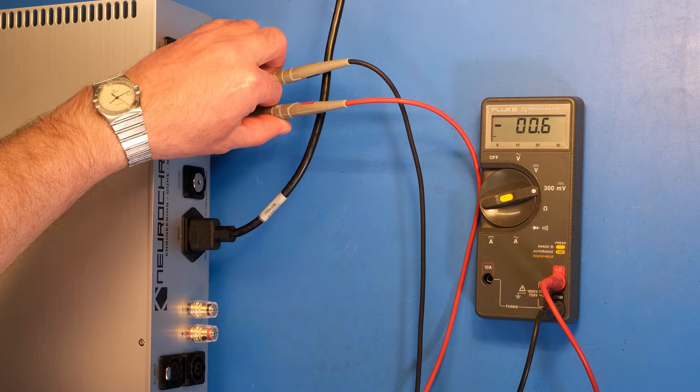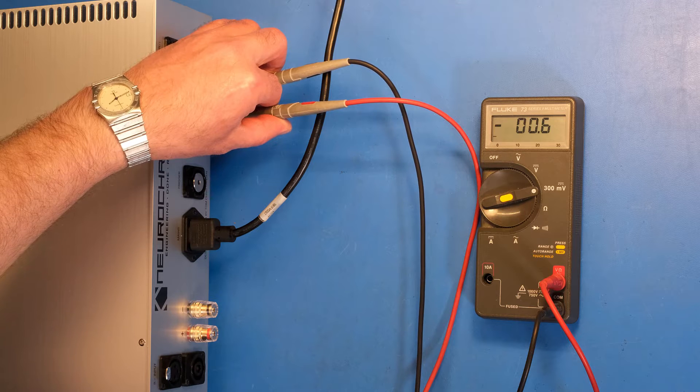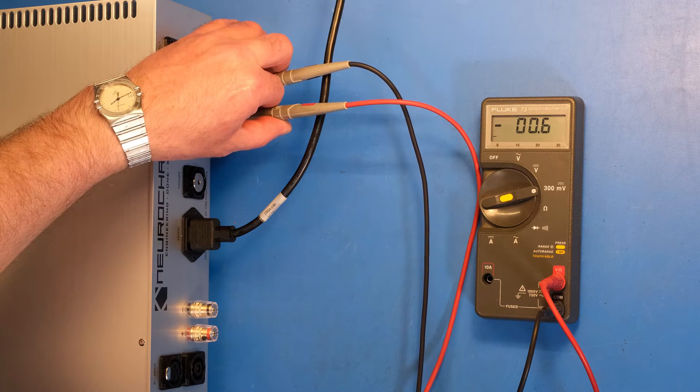And it registers minus 0.6 millivolts or minus 600 microvolts, which is very low for a DC offset.